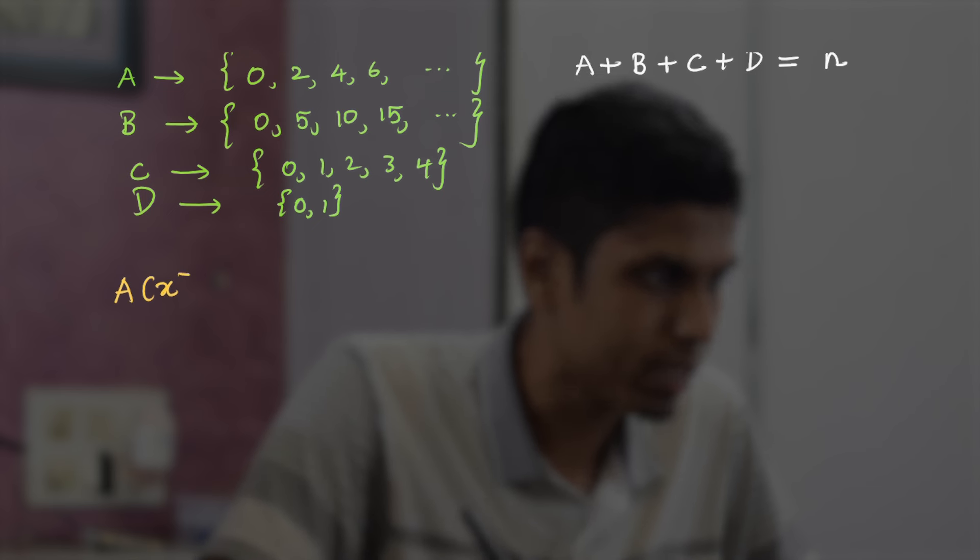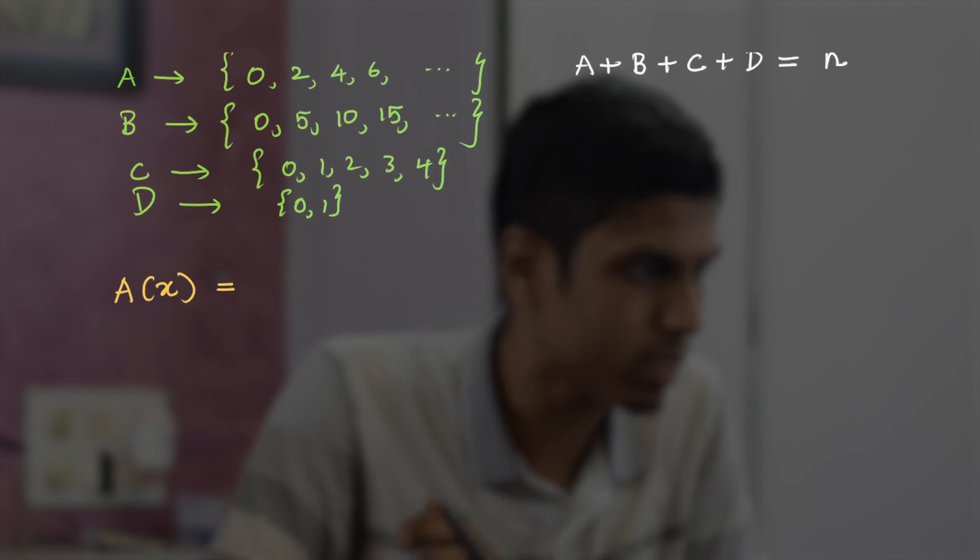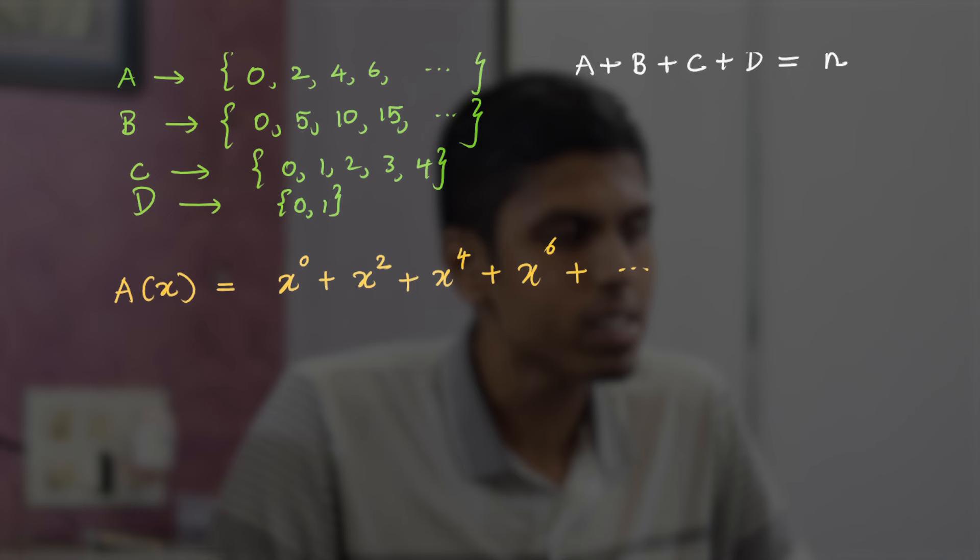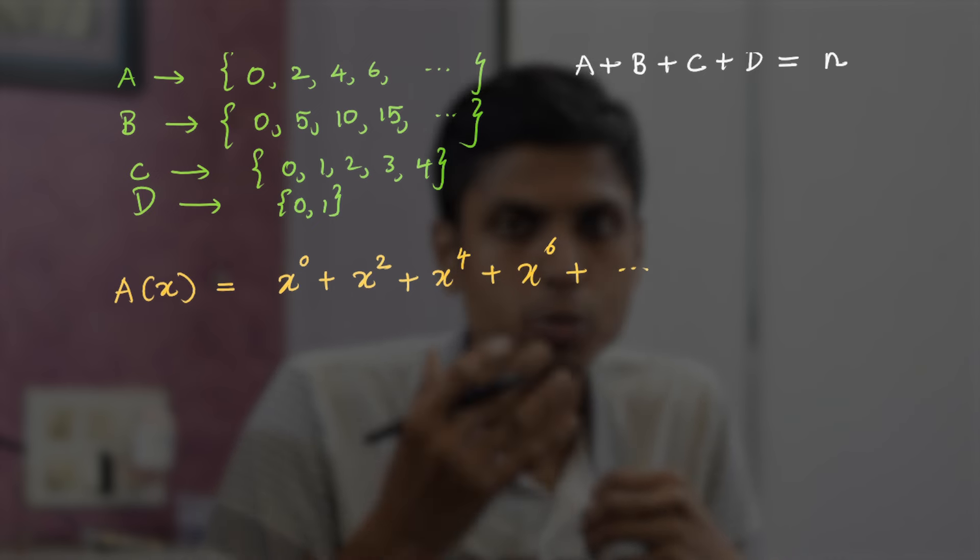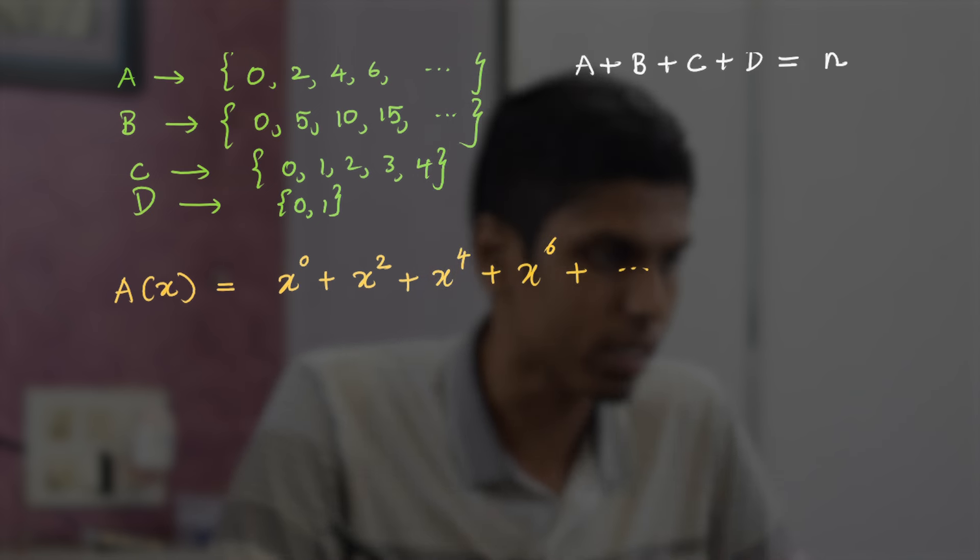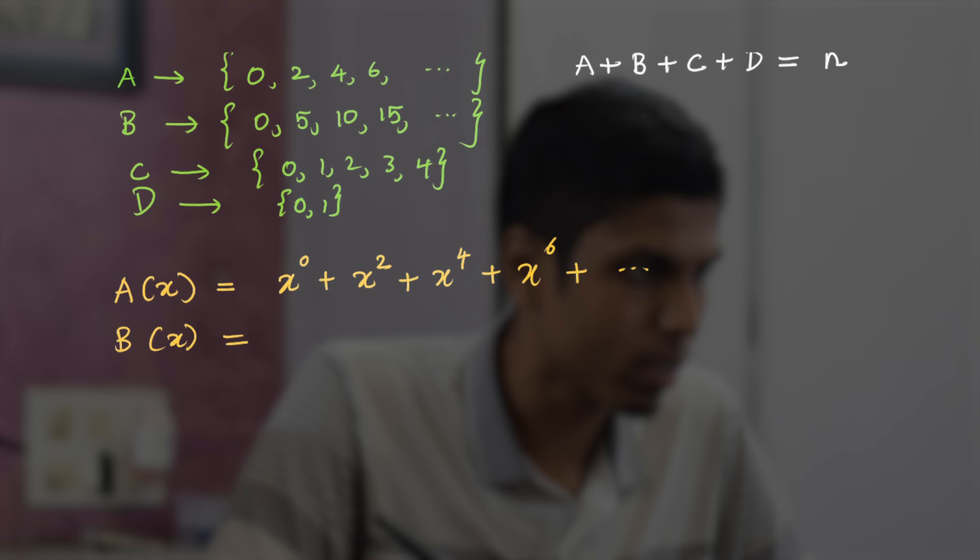The generating function of apples, say A(x), is the formal power series of the form x^0 + x^2 + x^4 + x^6 and so on. This means that we need to write the exponents as possible values of A. Neglect the x values whose exponents are not in the set A. That's the idea behind this power series.